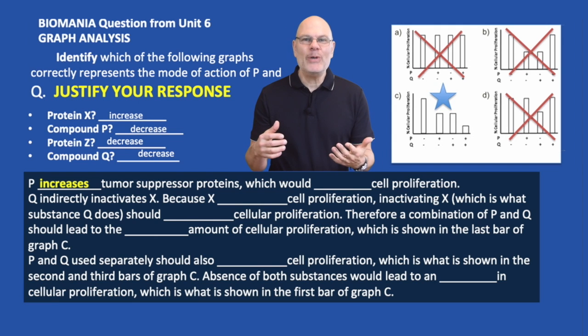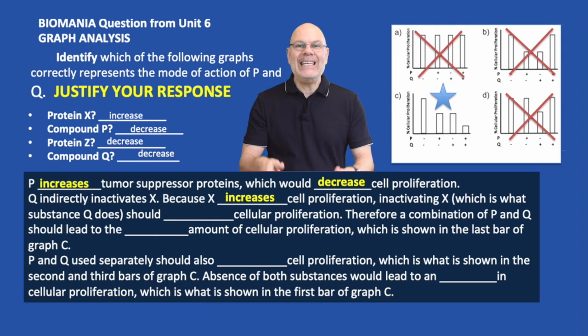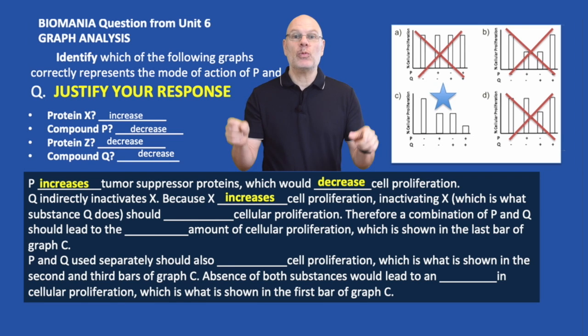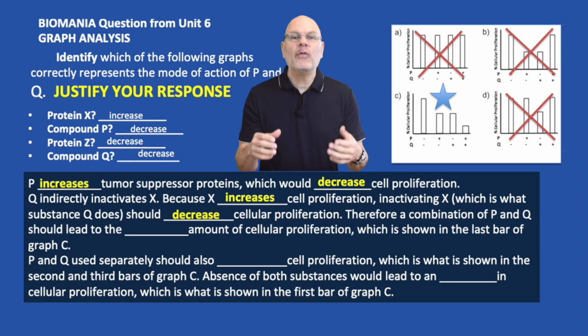P increases tumor suppressor proteins, which would decrease cell proliferation. Q indirectly inactivates X. Because X increases cell proliferation, inactivating X, which is what substance Q does, should decrease cellular proliferation.